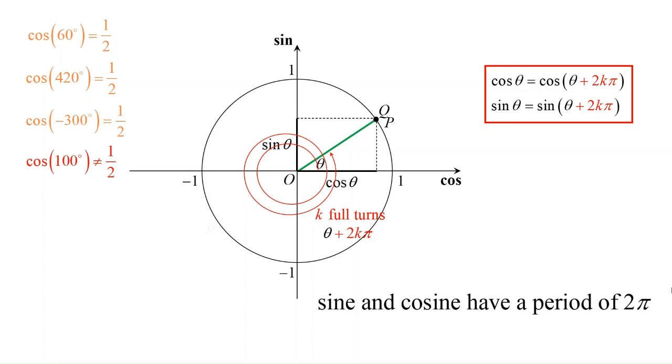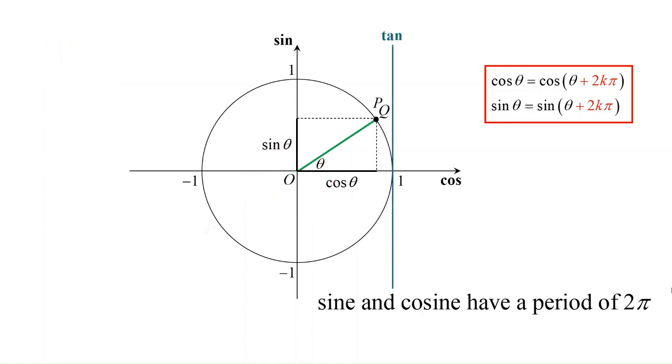In the previous lesson, we've seen that the tangent to the unit circle at the point (1, 0) is the tan axis, and extending OP to intersect the tan axis gives us tan theta.